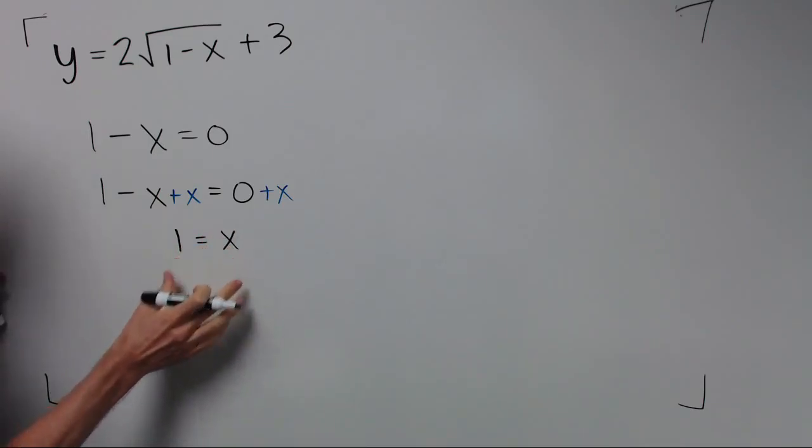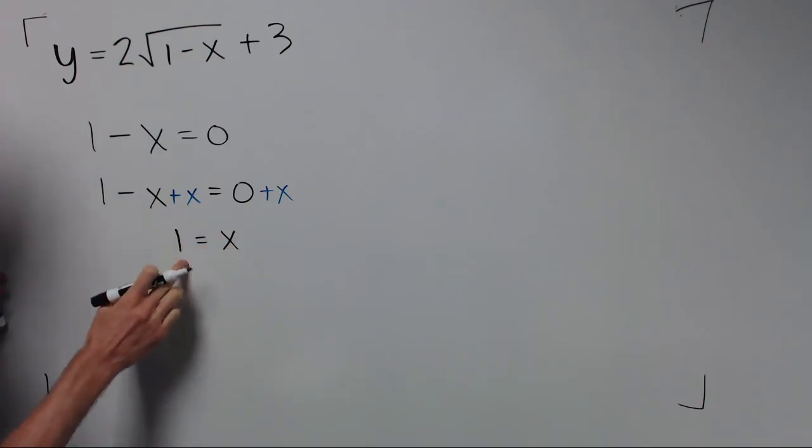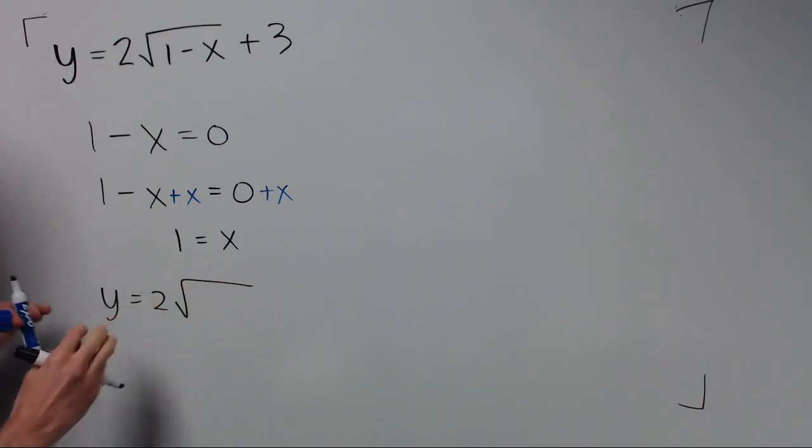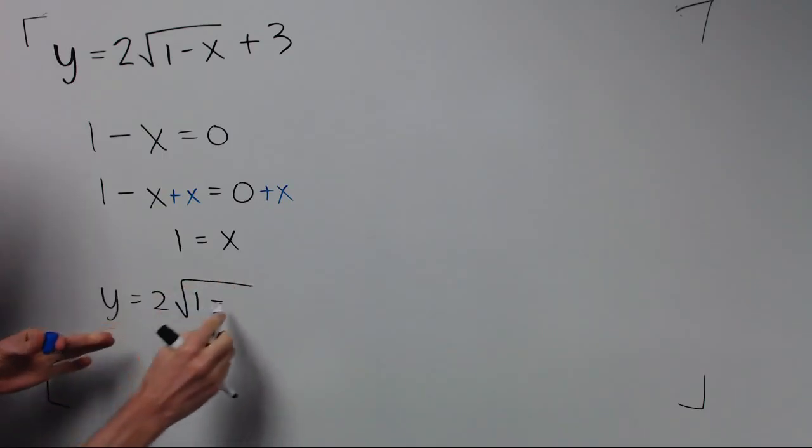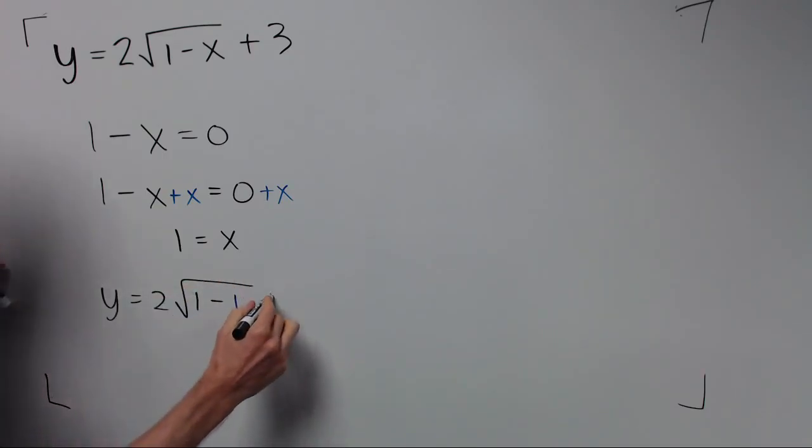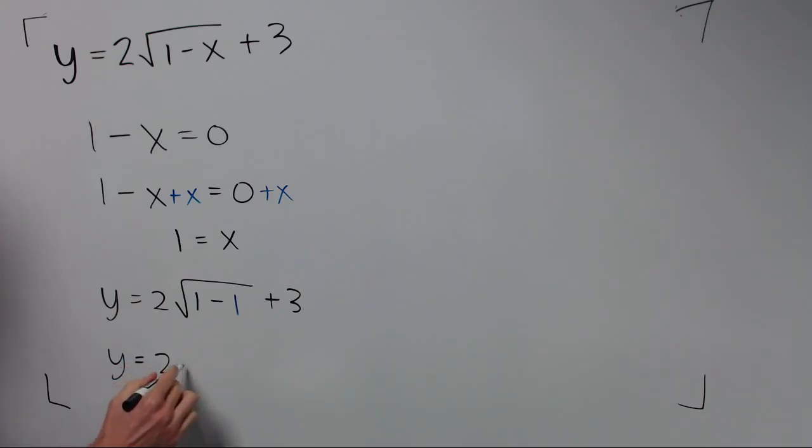So the starting point is when x is 1, we need the other coordinate. We're going to replace x with 1 in the equation. Okay, we get 1 minus 1 which is zero. Remember that was our goal was to make that zero.